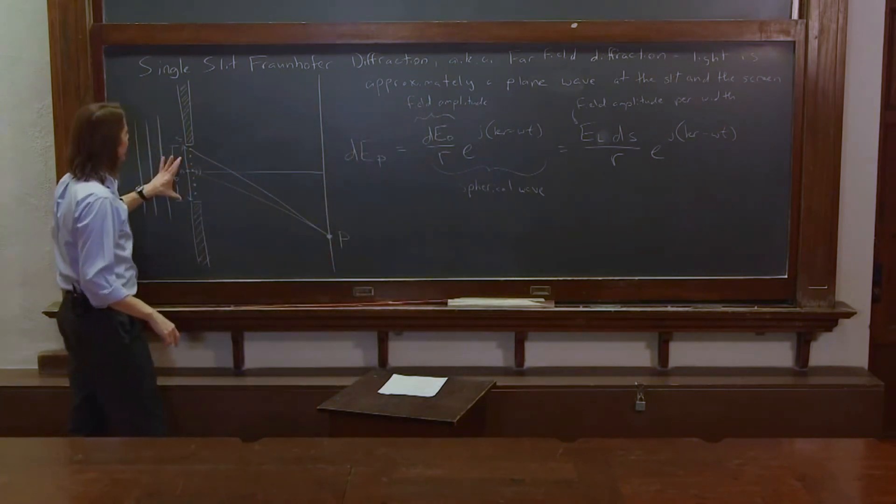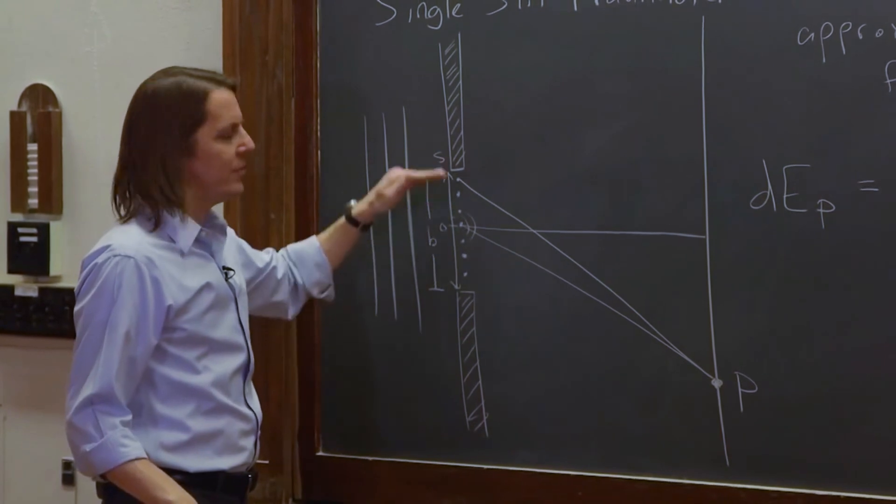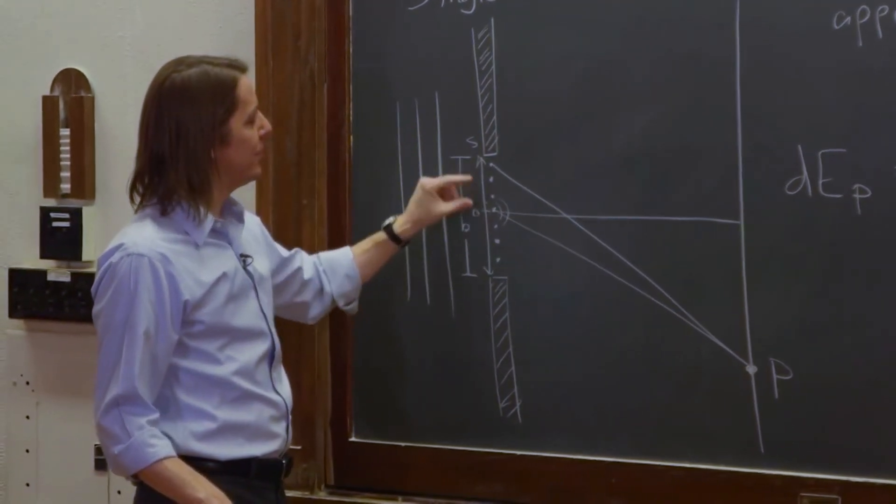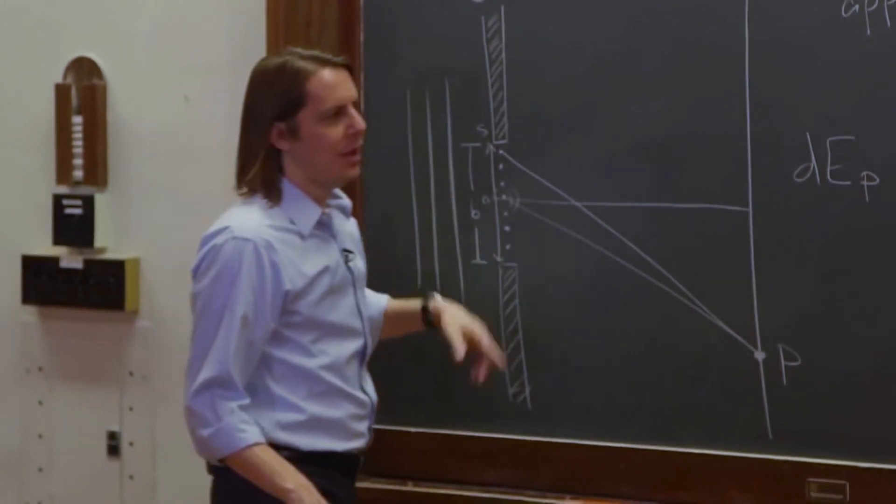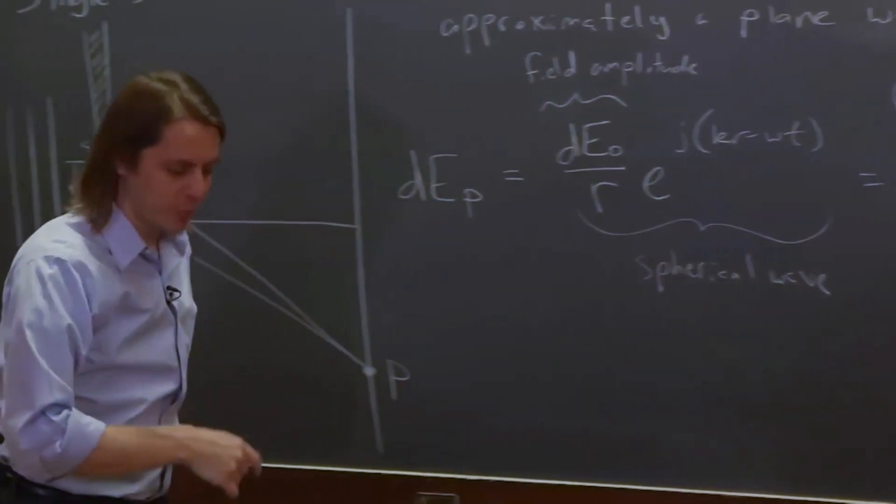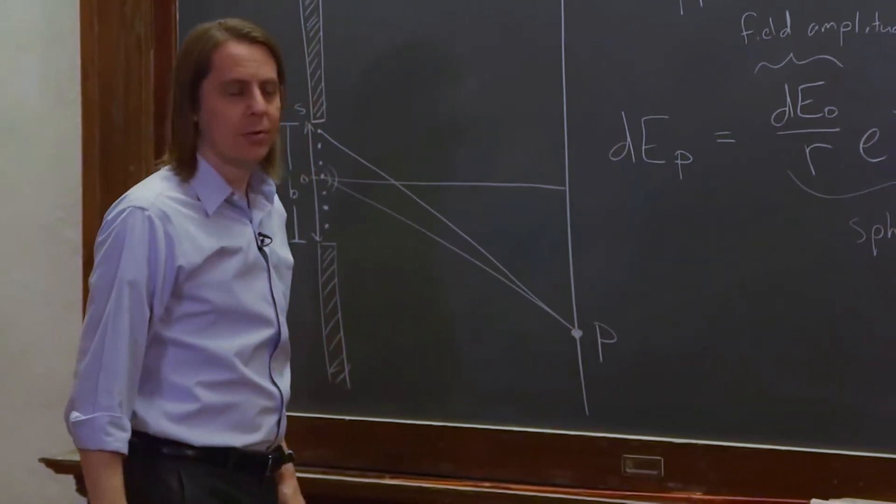It has a certain field amplitude per unit width, and you can divide the width into as small a piece as you want. So now that gets the differential into dS, and that's where we want it, because we're going to actually take an integral.